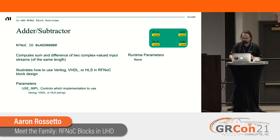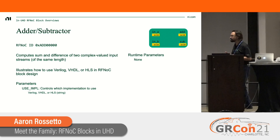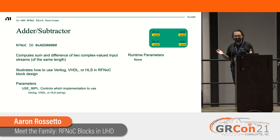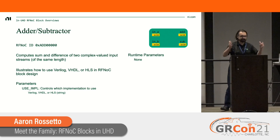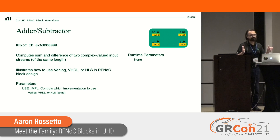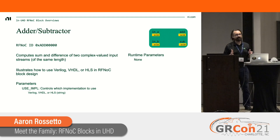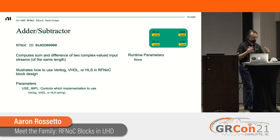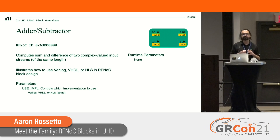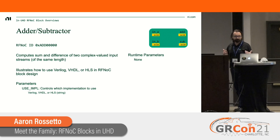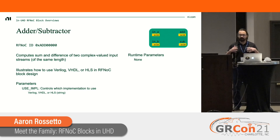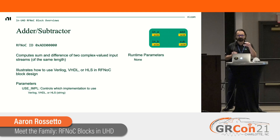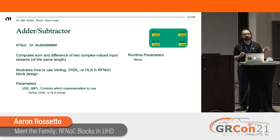The first mathematical block is the adder/subtractor block with an RFNoC ID of hex ADD followed by zeros — because it adds. It takes two input streams of signed 16-bit complex data and produces the sum and difference of each sample at its output. It's a very simple block, but it illustrates how to use Verilog, VHDL, or HLS in block design synthesis — we provide implementations of all three in UHD. The use_impl parameter tells the framework which one to instantiate.